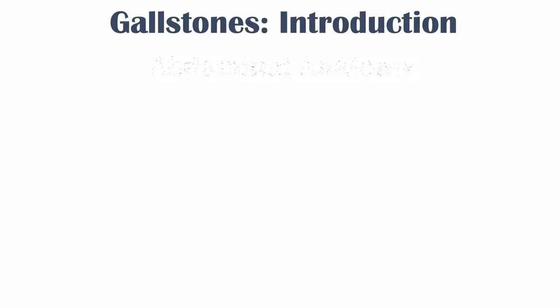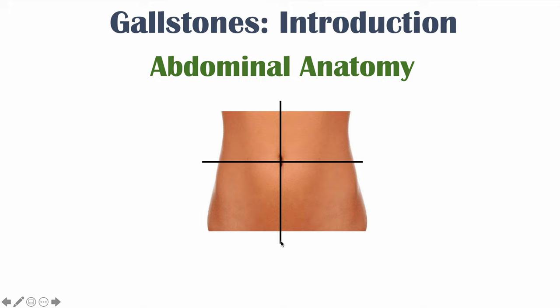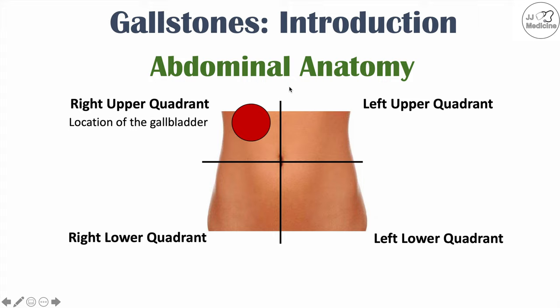Before discussing signs and symptoms, let me briefly cover abdominal anatomy. We split the abdomen into four quadrants using the belly button as the midpoint — a vertical and horizontal line creates the four quadrants. Looking directly at the patient, this is the patient's right side and left side, giving us the right upper quadrant, right lower quadrant, left upper quadrant, and left lower quadrant. With any gallstone disease, pain occurs in the right upper quadrant, where the liver and gallbladder are located, as well as the epigastric area.